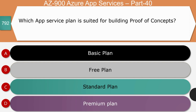Next question — which App Service plan is suited for building a proof of concept: basic, free, standard, or premium? The right answer is the free plan. The free plan allows users to use 1 GB of physical memory and can host up to 10 applications. It is best suited for building proof of concept to prove a technical decision before release. You are not charged for anything hosted under the free plan, and since proof of concept is a short-lived phase, there is no need for high cost.